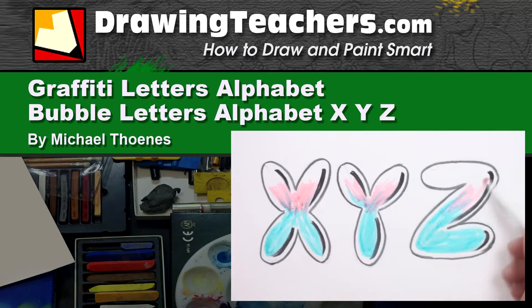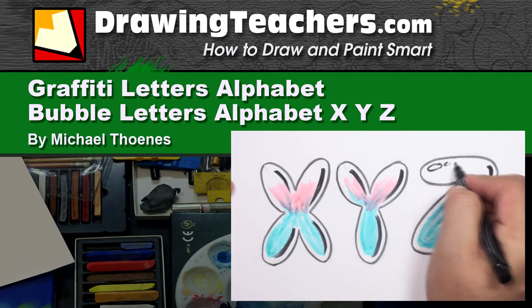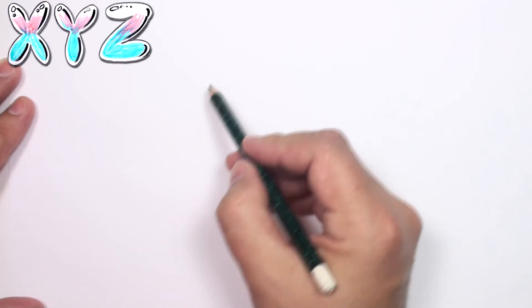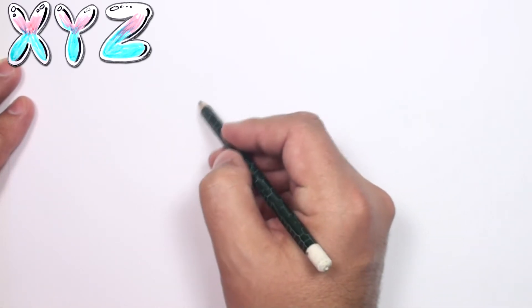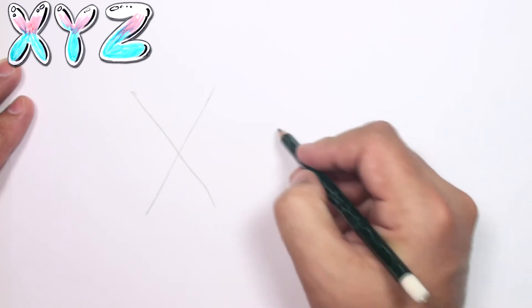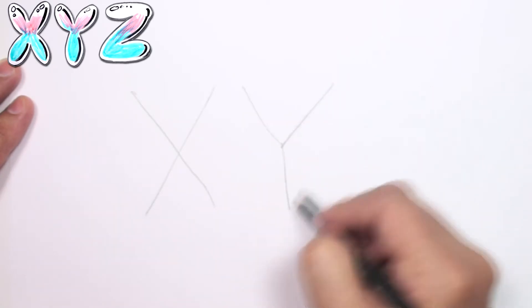Michael here with DrawingTeachers.com. And now for the last in our bubble letter alphabet series, let's go ahead and do X, Y, and Z.